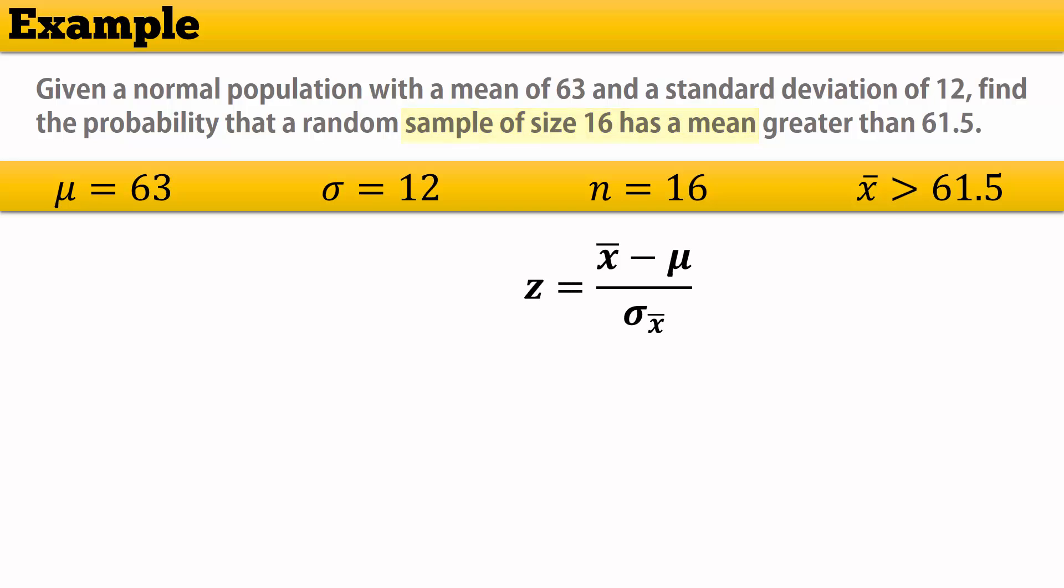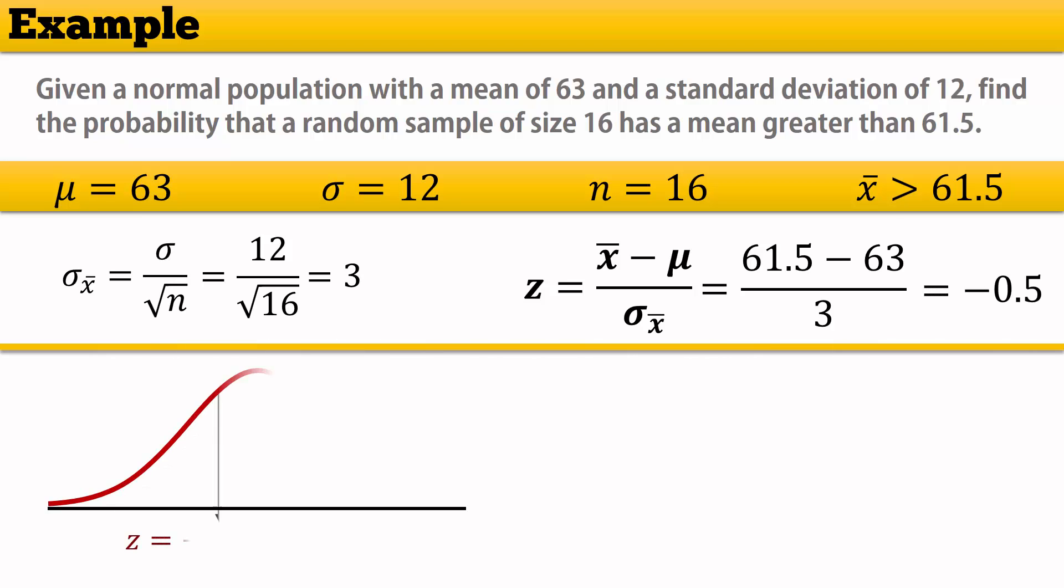So we can apply the Z formula for sampling distribution of the mean. The standard error is 12 divided by root 16, which gives 3. So the Z score is 61.5 minus 63 divided by 3, which gives negative 0.5.